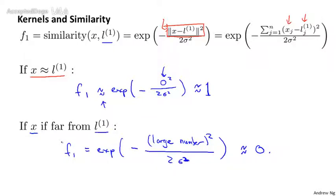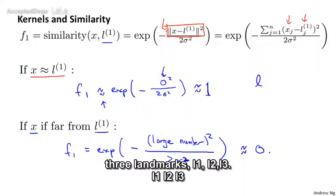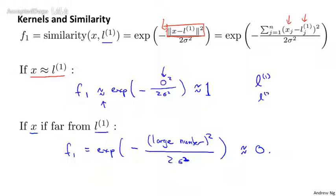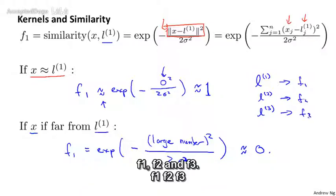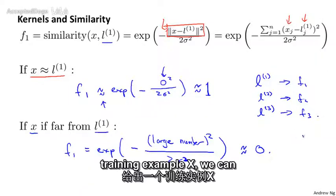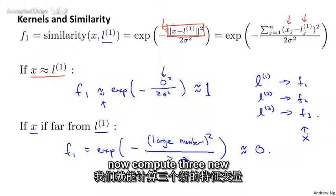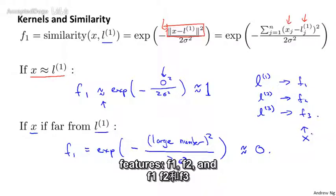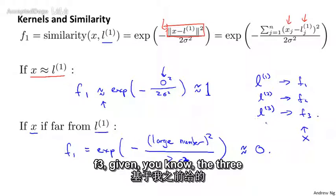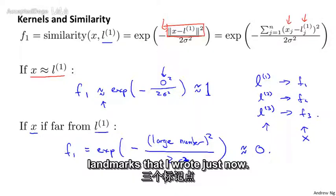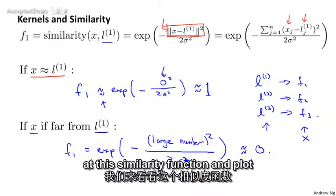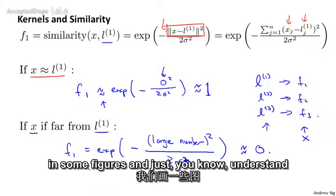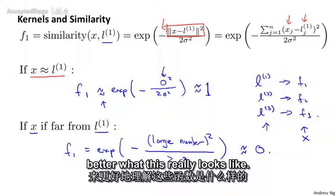Each of these landmarks — l one, l two, l three — defines a new feature, f one, f two, f three. That is, given the training example x, we can now compute three new features f one, f two, f three given the three landmarks. Let's look at the similarity function and plot it in figures to better understand what this really looks like. For this example, let's say I have two features x one and x two, and my first landmark l one is at location 3, 5.